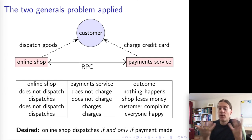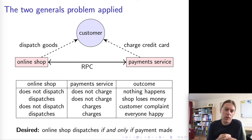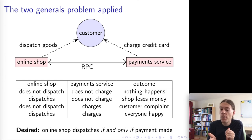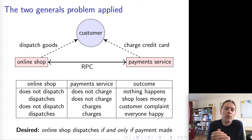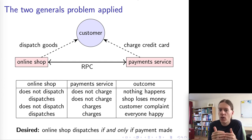In practice, online shops do work, but the reason they work is because there are second-level safeguards that ensure a reasonable outcome. For example, if the card got charged but the online shop doesn't have the goods in stock, the online shop will send an apology email saying 'sorry, we're out of stock, we've refunded your card.' This works because the charge is a revocable action — it's possible to refund the charge and therefore get back into a safe state where neither the goods dispatch nor the payment has effectively happened.